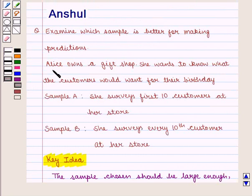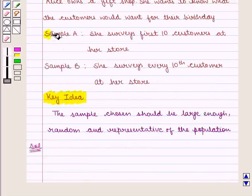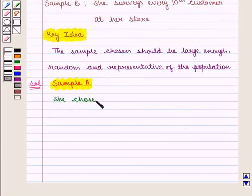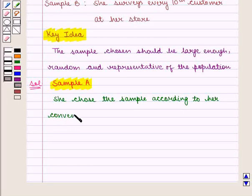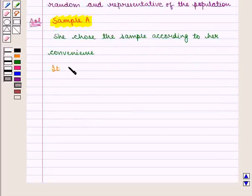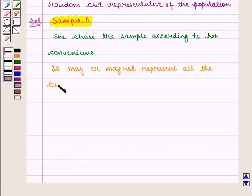In this question, Alice wants to know what the customers would want for their birthday. If she chooses Sample A, she asks the first 10 customers what they would want for their birthday. She chose the sample according to her convenience, and it may or may not represent all the customers because people with different age groups have different liking.